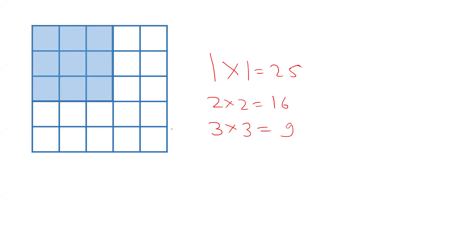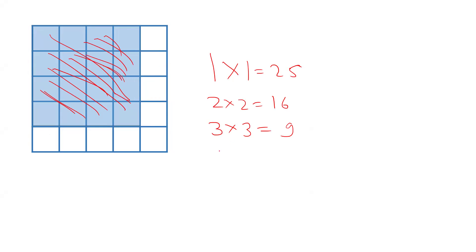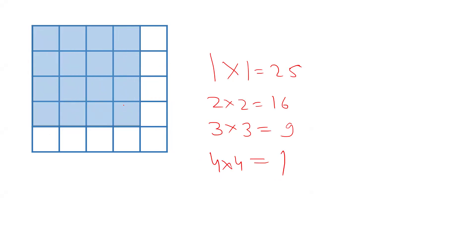Now the bigger one: 4 by 4. This complete square is 4 by 4 and there are 4 such squares. And then there is one bigger square — that is the 5 by 5 square. So 4 by 4 has 4 squares and 5 by 5 has 1 square.